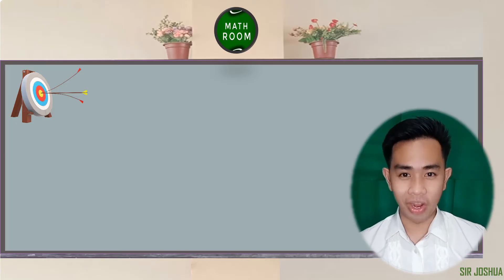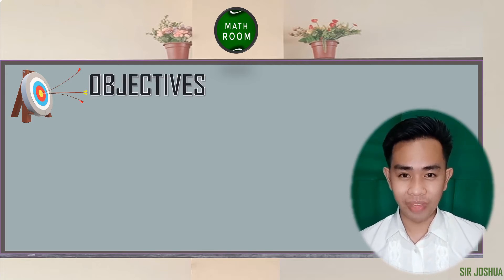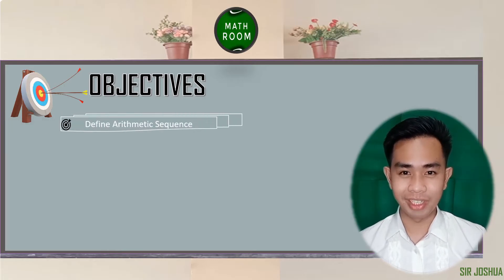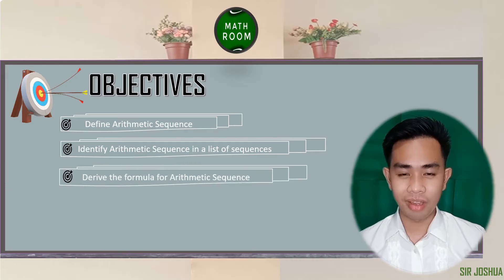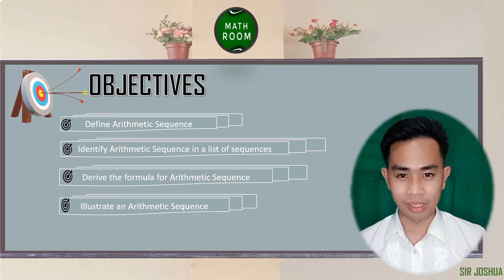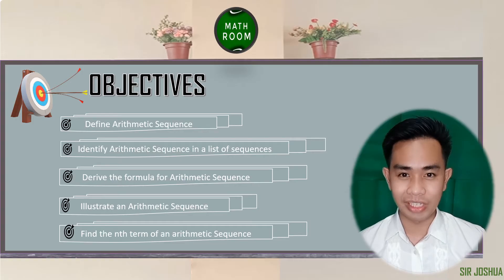Before we begin our discussion, let me present to you our objectives. At the end of this video, you should be able to: define arithmetic sequence, identify arithmetic sequence in a list of sequences, derive the formula for arithmetic sequence, illustrate arithmetic sequence, and find the nth term of an arithmetic sequence. Let's begin.